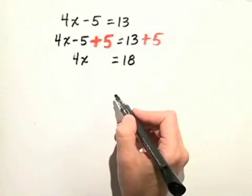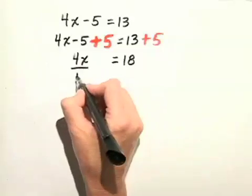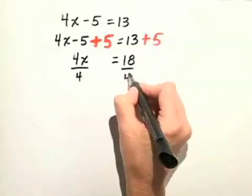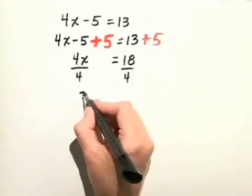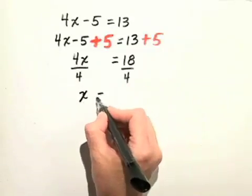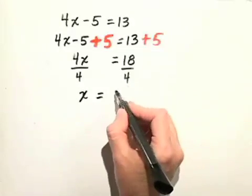Next, we'll use the division property of equality and divide both sides of this equation by 4. 4 divided by 4 gives us 1, so 1x, or x, is equal to 18 fourths.